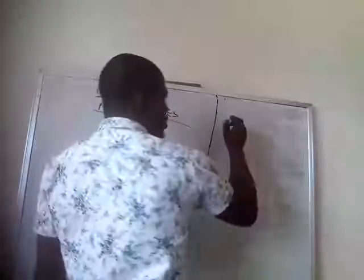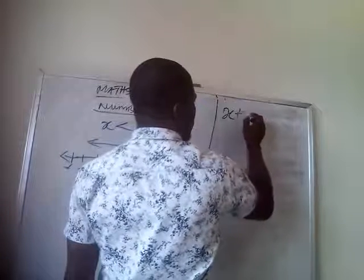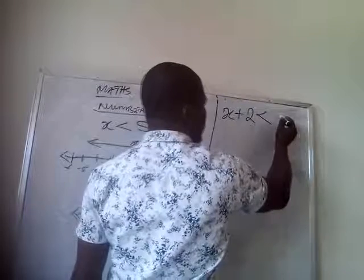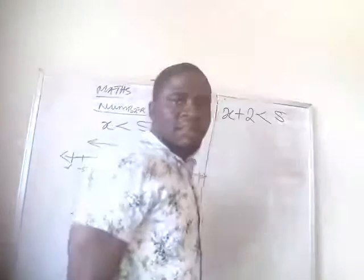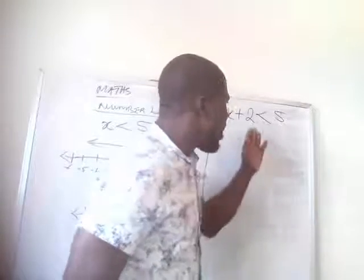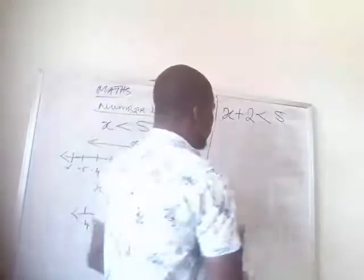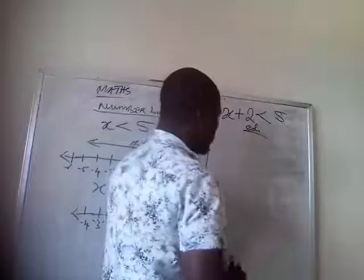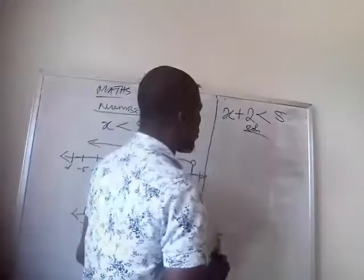If you are giving X plus 2 is less than 5, solve and represent it in a number line. Here now, the first thing you will do, your solution.